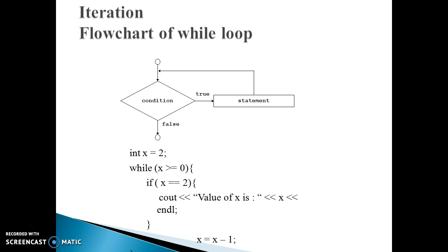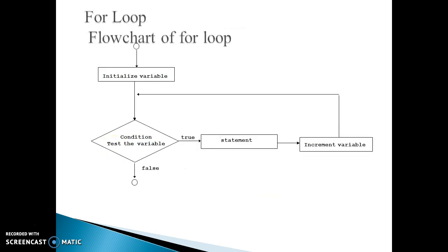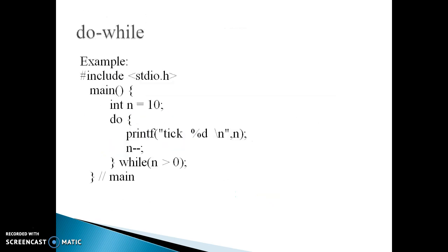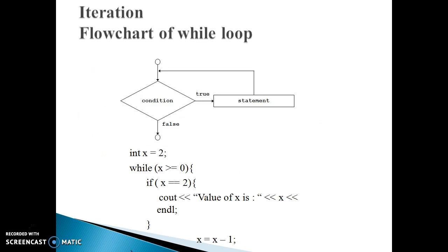The next statement is the while statement. Loops are used in programming to repeat a specific block of code after condition checking. It first evaluates the condition — if it is true then go to the statement, if it is false it goes to another statement — meaning it repeats a specified block of code.